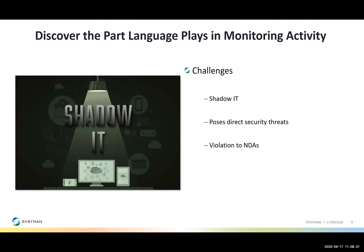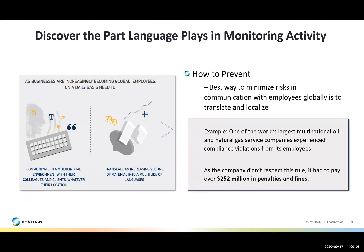Shadow IT possesses direct security threats such as confidential and proprietary data loss, exposing customer information, and uncontrolled data. It can also cause businesses to fail compliance audits. Using online translation tools that are free on the internet, not encrypted or protected by firewall, could be seen as a contract violation. Placing confidential proprietary information within the cloud can be seen as a direct violation of most NDAs and could lead to a lawsuit for damages. Once a compliance policy is in place, it must be communicated to employees and operations overseas.